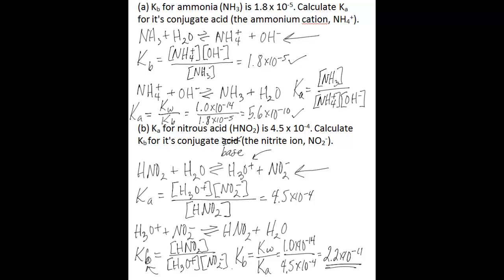And that is your Kb value. Notice the Kb for nitrite is much smaller than the Ka for nitrous acid. This is telling you that nitrous acid is a much stronger acid than nitrite is a base, and that makes sense.